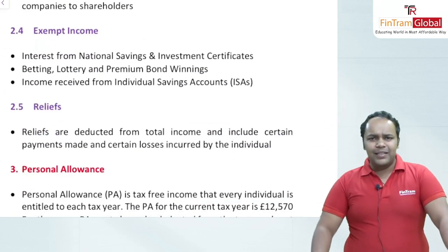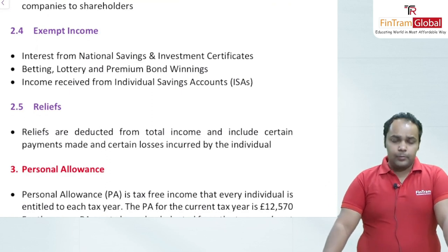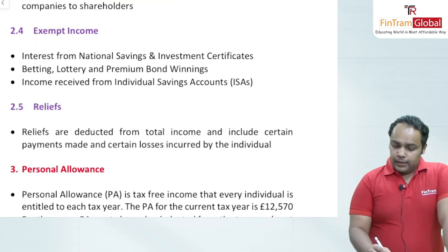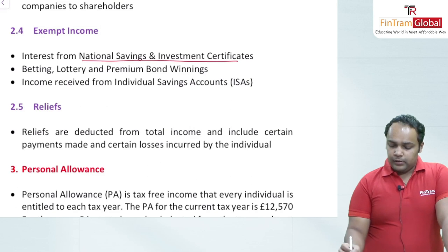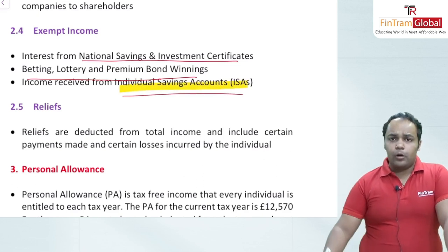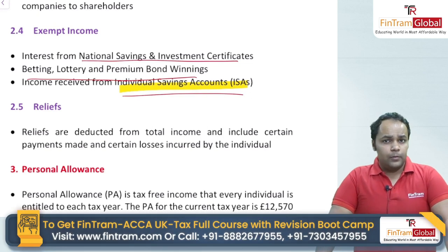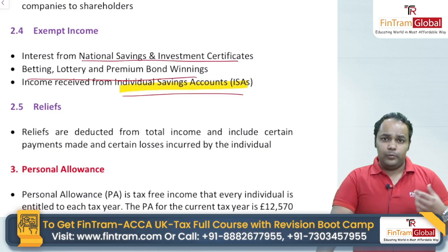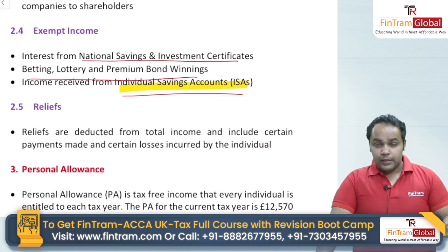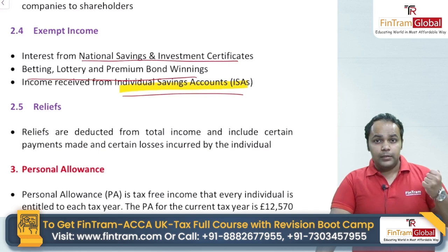There are mainly three kinds of exempt income, which must be noted as exempt in the exam. These include interest from national savings and investment certificates, betting, lottery and premium bond winnings, and income received from individual savings accounts (ISAs). ISAs are widely used by UK residents because any income — whether general income or capital gains — earned through ISAs is tax free.